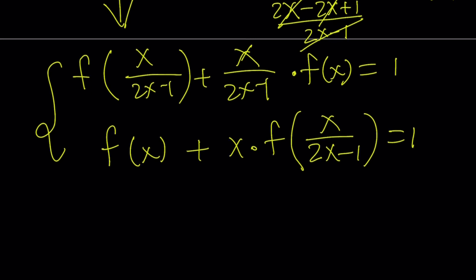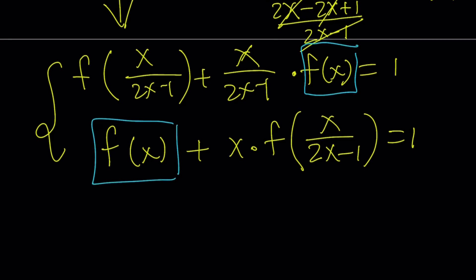That is the equation after substitution. The original equation is f of x plus x times f of x over 2x minus 1 equals 1. I now have a system, and in this system we have two unknowns: f of x and f of x over 2x minus 1. My goal is to solve for f of x, so I want to eliminate f of x over 2x minus 1 using elimination. Since the coefficient of f of x over 2x minus 1 is x, I'm going to multiply the first equation by negative x and then add the two equations.